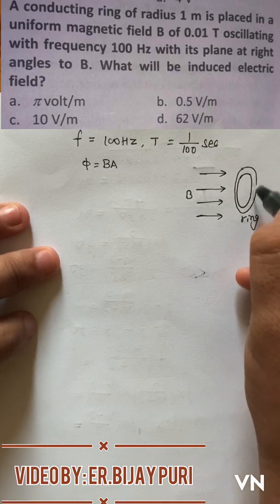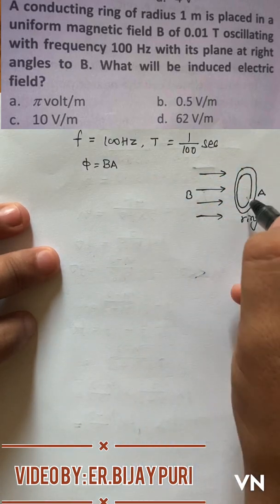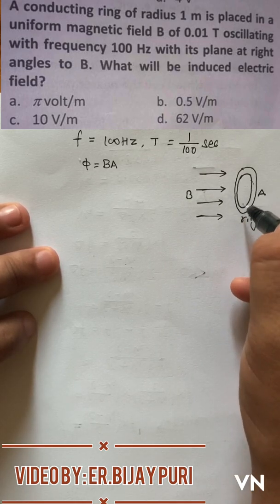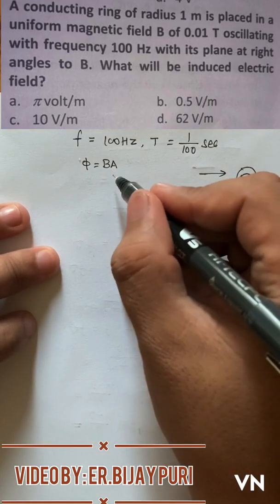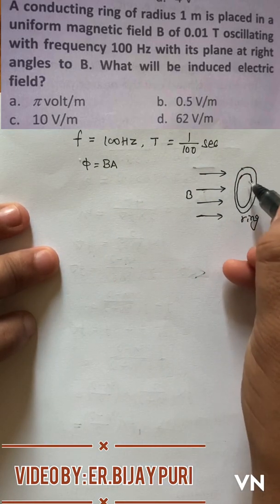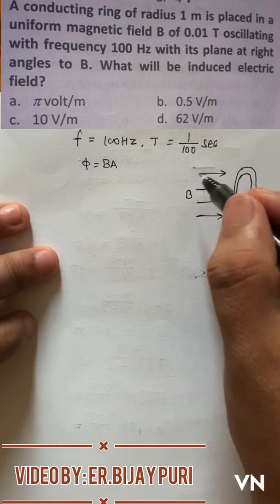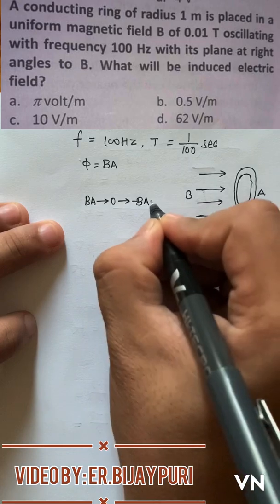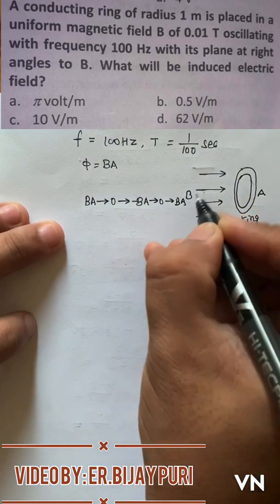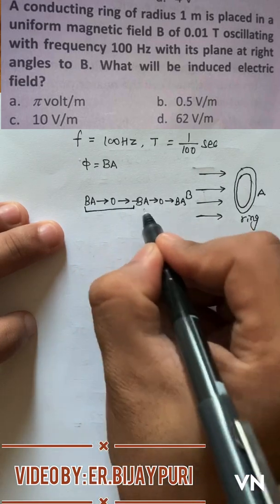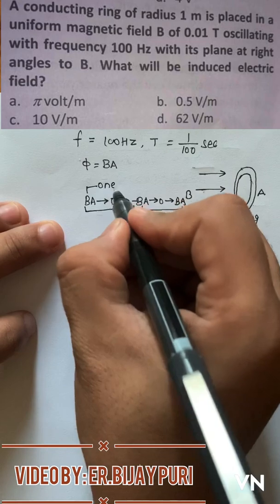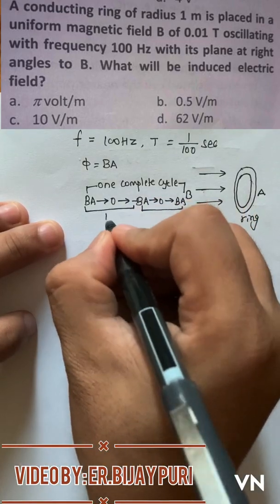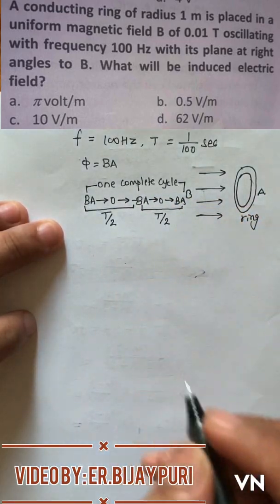If its area is A, then how much flux will link up with this ring? That is phi equals BA. Being its plane oriented at right angle to magnetic field, the flux linkage is maximum. At this instant the flux linkage is BA, and if this ring is turned by 90 degrees then the flux linkage will be 0, and again if this ring is turned by another 90 degrees then flux linkage will be minus BA, and again if it is turned at a right angle then again becomes 0 and then again becomes BA. That means we have a cycle of BA, 0, minus BA, 0, BA. So this one is one complete cycle.